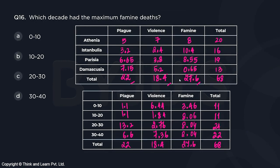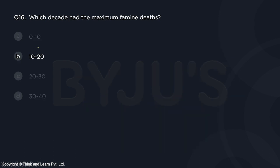Question 16: Which decade had the maximum famine deaths? Looking at the famine column in the decade-wise table, 8.06 lakh is the largest value and it corresponds to decade 10 to 20. So the answer is option B.